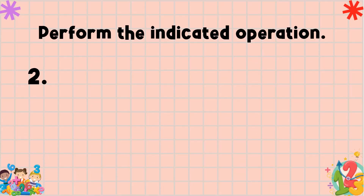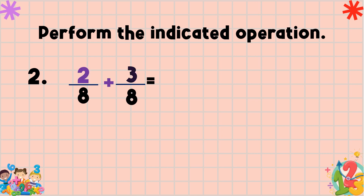Another example: two eighths plus three eighths. We add the numerators — two plus three is equal to five. Then copy the common denominator, which is eight. Our answer is five eighths. There is no common factor between five and eight except one, therefore five eighths is already in lowest terms.